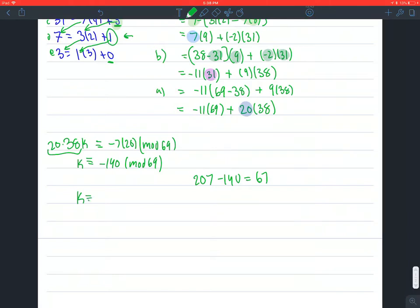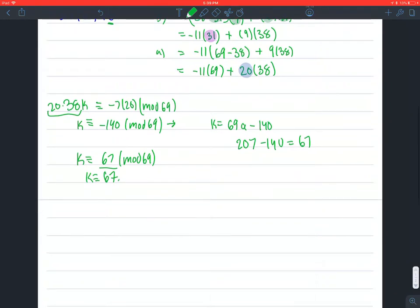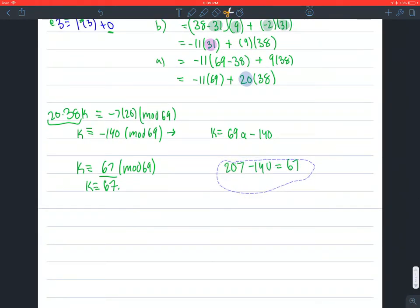So we know that K is 67 mod 69, and we know that because this is less, K is just 67. And then now if we go, and also this can be rewritten as 69, let's just call it A, minus 140. If I move this over, so K equals, and then that, this A value, we just said, needs to be 3. So 69 times 3, minus 140, equals that 67.